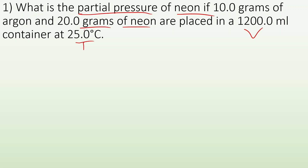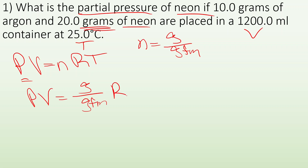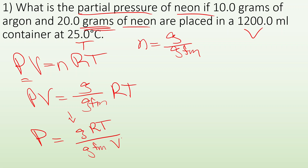If I have 20 grams, I need to know how many moles that is. I like putting them all together. I know PV = nRT, and we also know that moles equals grams divided by the GFM. So if I plug that in, I get PV = (grams / GFM) × RT. And if I'm solving for P, I divide each side by volume, so pressure equals grams times RT all over GFM times volume.